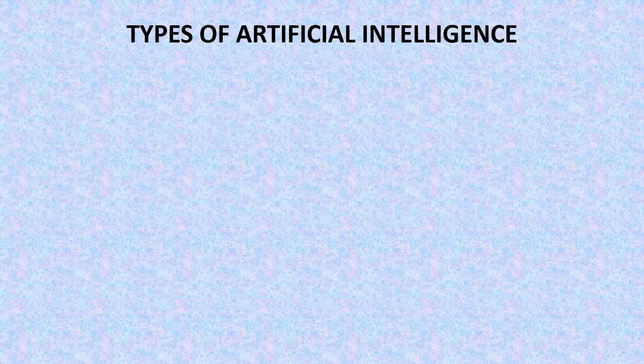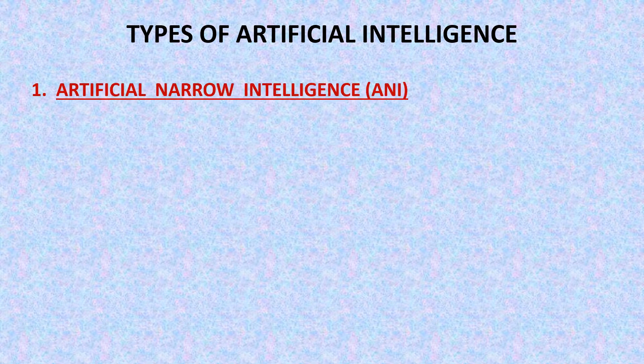Now let's discuss types of artificial intelligence. Artificial intelligence is broadly divided into two types. First is artificial narrow intelligence and second is artificial general intelligence. First let's discuss artificial narrow intelligence, that is ANI.